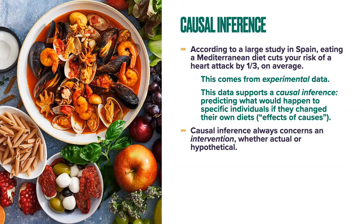Now we come to the third goal — and this is the hardest game in statistics and data science — causal inference. Here's an example: the PREDIMED study, done primarily in Spain. According to this study, eating a Mediterranean diet — pasta, fish, vegetables, olive oil — cuts your risk of a heart attack later in life by one third on average. The ability to make that cause-and-effect statement comes because this was experimental data: a randomized controlled trial assigning some people to the Mediterranean diet and others to a different diet.